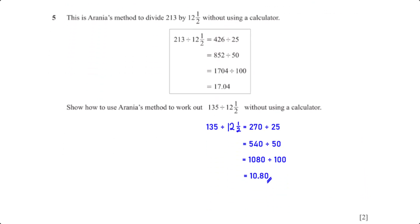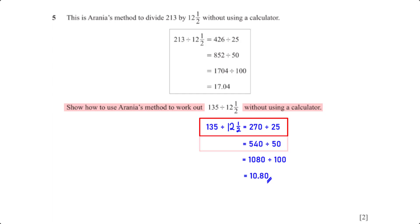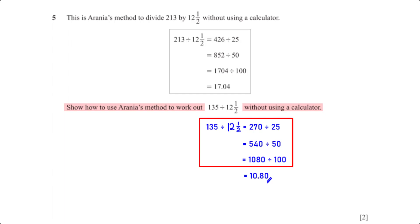This is Arinius's method to divide 213 by 12.5. Without using a calculator, show how to use Arinius's method to work out 135 divided by 12.5. In the first step we multiply 135 by 2 giving us 270, and we also multiply 12.5 by 2 giving us 25. In the next step we double: 270 times 2 gives us 540, and 25 times 2 gives us 50. Then 540 times 2 is 1080 and 50 times 2 is 100. In the final step we divide 1080 by 100, which gives us 10.8.